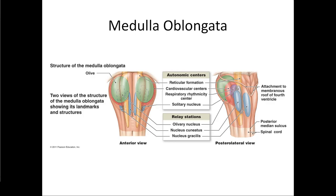Moving on from these basic structures, we're going to focus heavily on particular structures in the brain, starting from the bottom. The medulla oblongata is this base brain area that controls a lot of absolute core functions: cardiovascular centers setting things like heartbeat, and respiratory rhythmicity centers setting the pattern of our breathing. We also have relay stations that transmit signals from our spinal cord to our brain and back down.